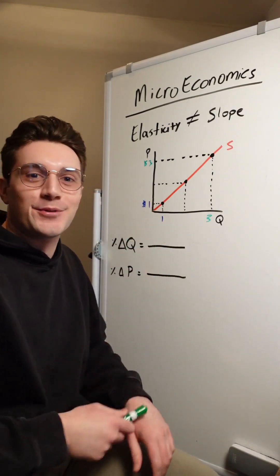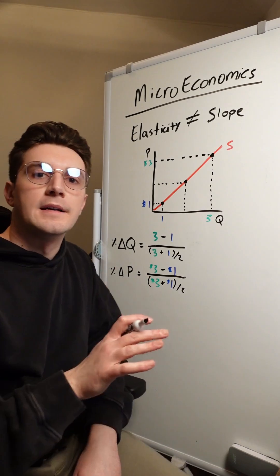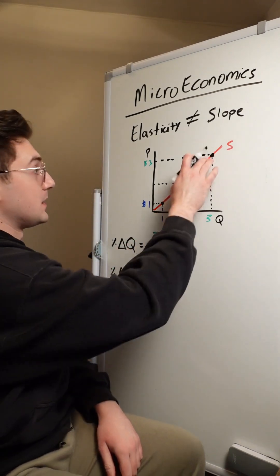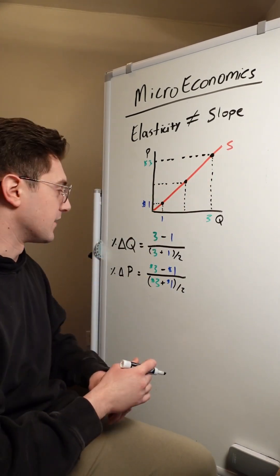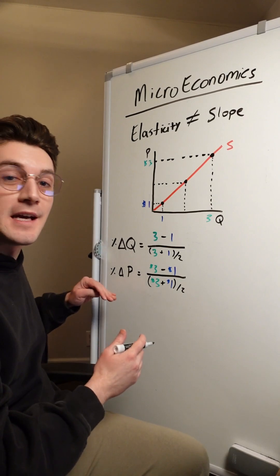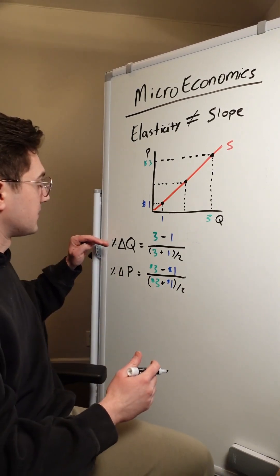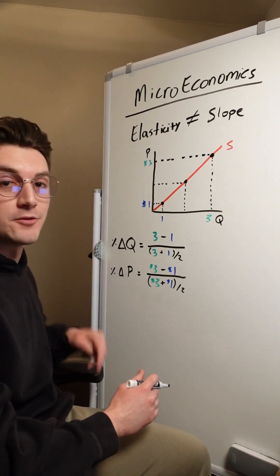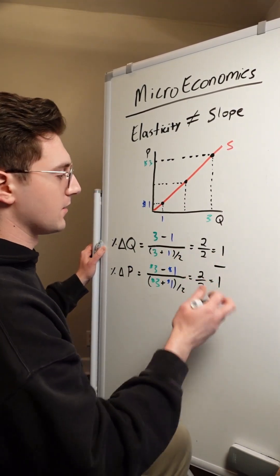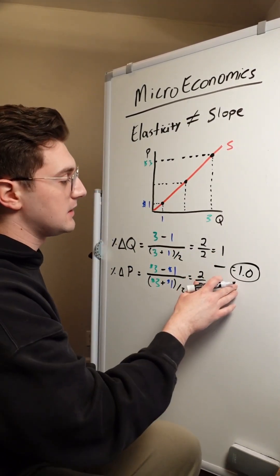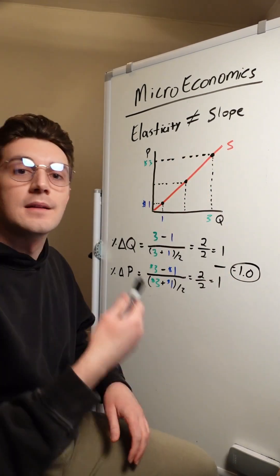I'm using super simple numbers here just so we can see what's actually at play. I've plugged P2 and P1 into the midpoint method formula, separating out the numerator and denominator so we can visualize easier. Remember, on top is the percent change in quantity, on the bottom is the percent change in price. When I solve these out and divide them, we get a price elasticity of supply value of 1.0 when moving from P1 to P2.